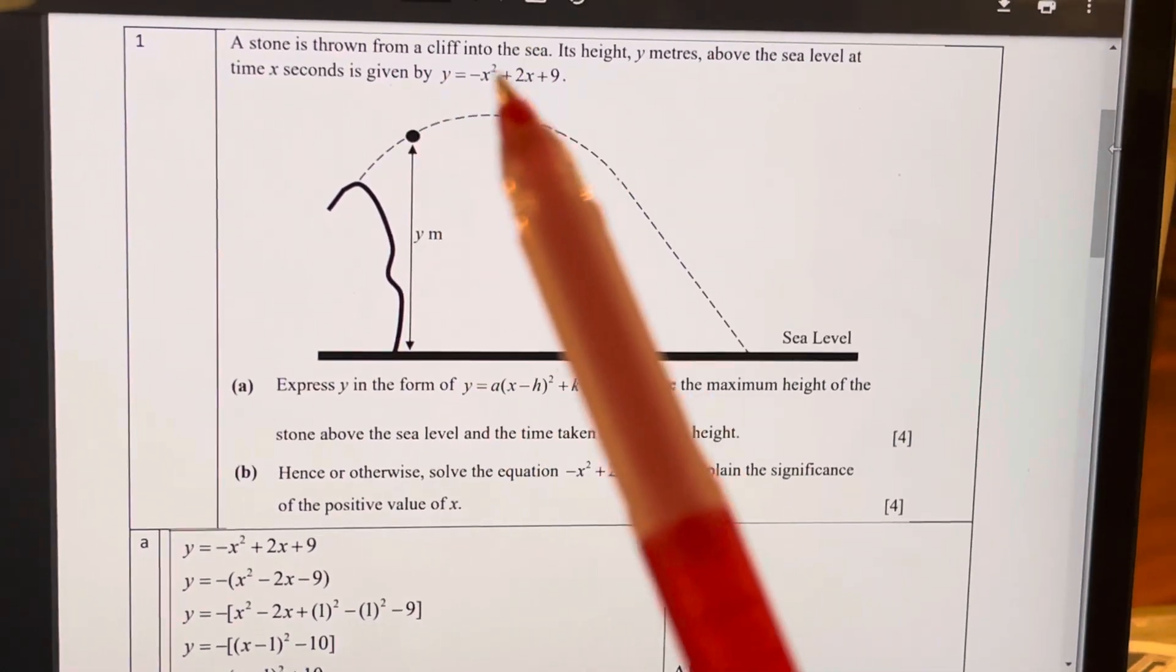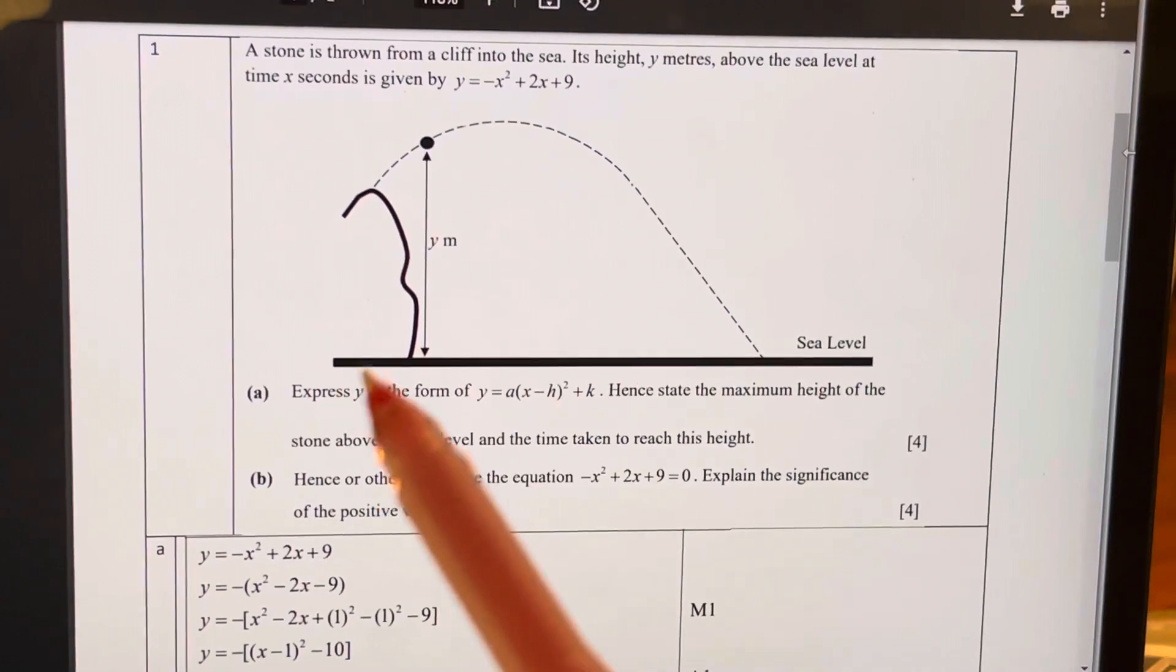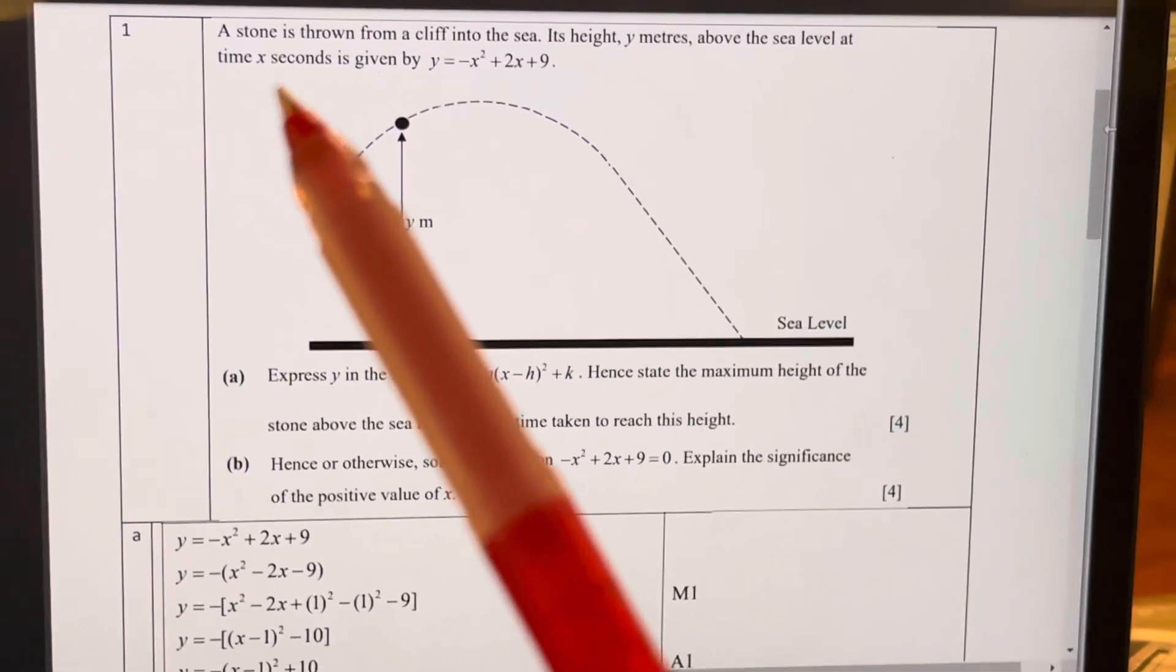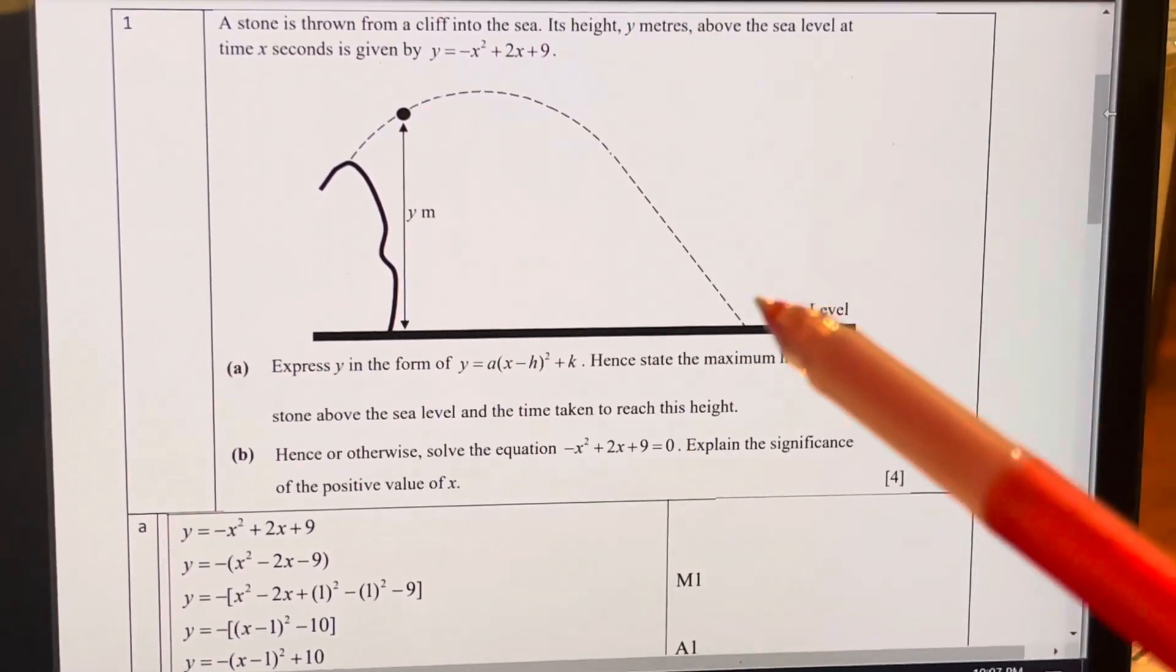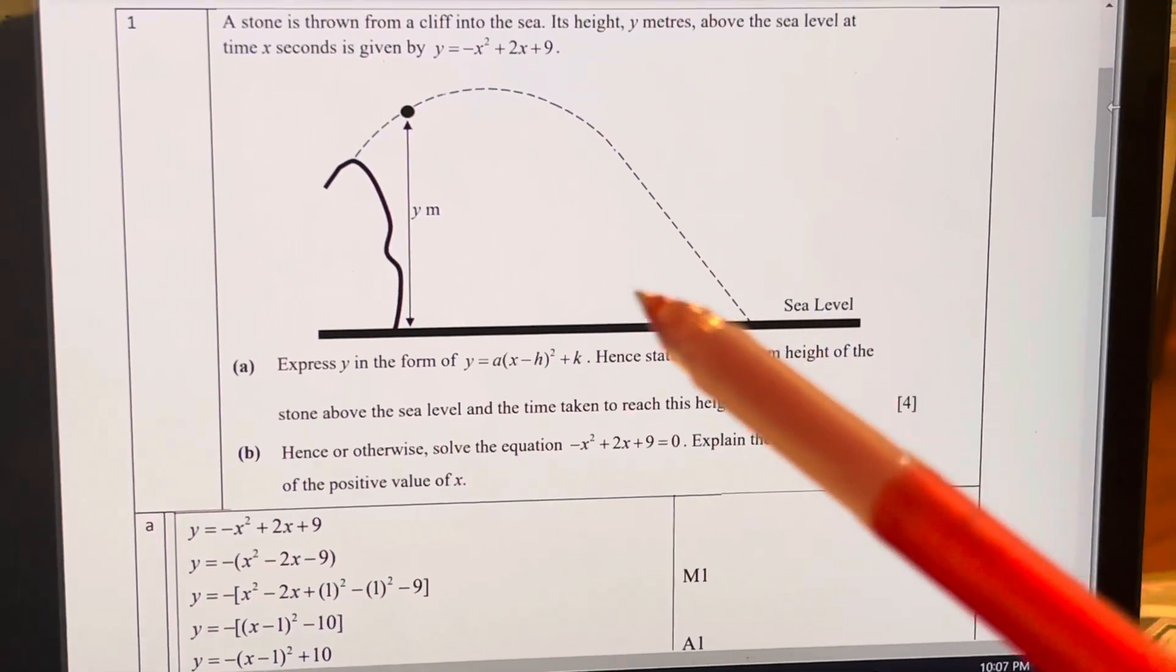And this X here does not represent the distance from the launch point or whatever. It represents the time, once you start to throw the thing, what is the time that is taken.